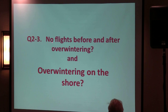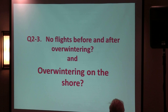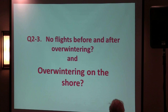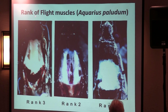The last question is about no flights before and after overwintering, and overwintering on the shore. Formerly this species overwintered by flying to a warmer place under forests and leaf litter — this is well-known knowledge for entomologists. Flight mass rank three is only available for flight; rank two and one individuals cannot fly.